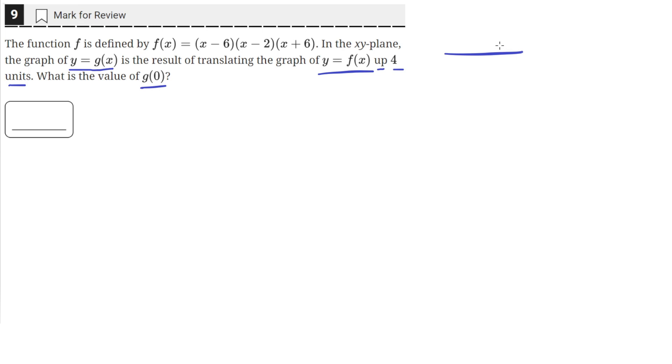So say f(x) was some kind of line that looked like this in the xy plane, then g(x) would just be the line translated up 4 units. So every point on f(x) would just be translated up. So g(x), the translated graph, would just be equal to f(x) plus 4.